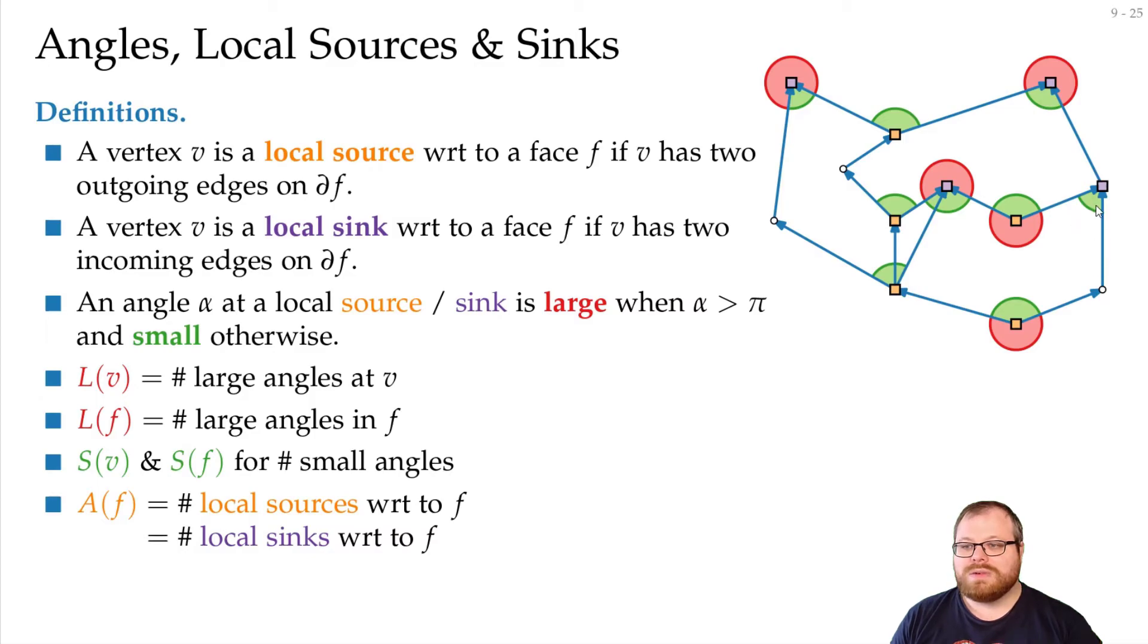let's say we start at some point, we move down, and whenever we start moving upwards, we have a local source. When we start moving downwards again, we have a local sink. And clearly, whenever we walk around the boundary cycle of this face, whenever we change the direction to go up, at some point we have to change it to go down again. So, for every local source, we must have a local sink.